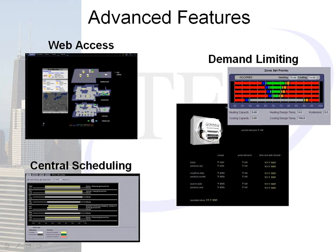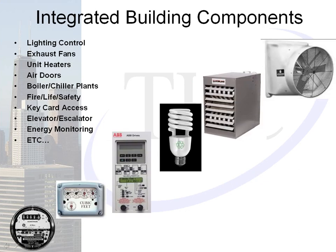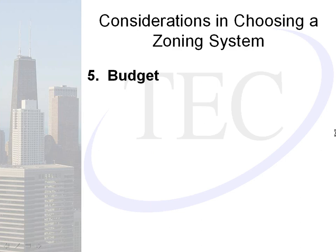Advanced features to consider include whether the customer needs web access or centralized scheduling, demand limiting to save on energy consumption, and integration of additional building components like lighting, exhaust fans, unit heaters, and air doors. Once you download this presentation, you'll have all of this information. Feel free to call or email at any time to discuss further.